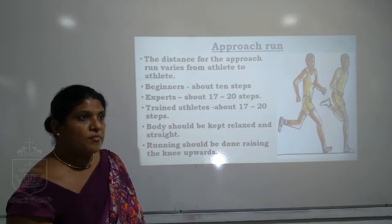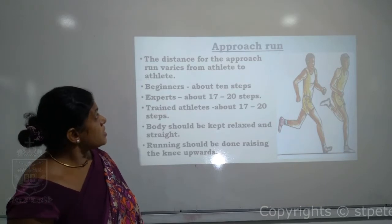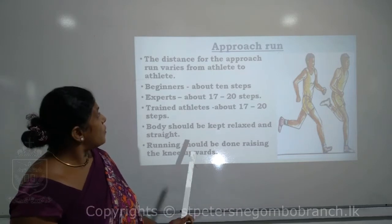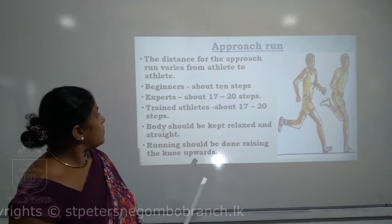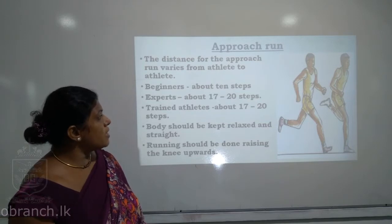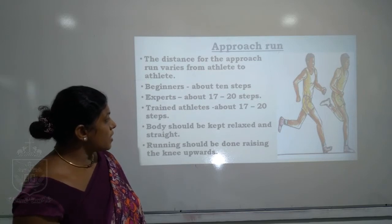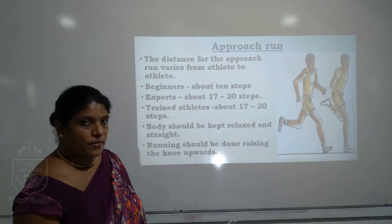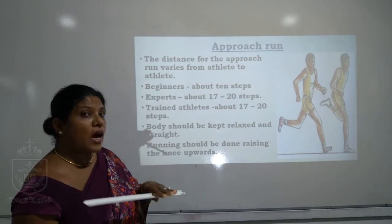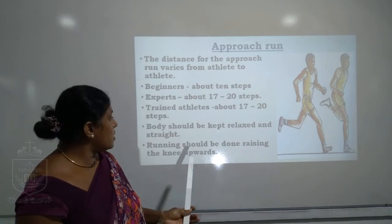Now we will take each of the main phases one by one. First, the approach run. The distance for the approach run varies from athlete to athlete. For beginners it is about 10 steps; for experts and trained athletes, 17 to 20 steps. The body should be kept relaxed and straight, and running should be done raising the knees upward.